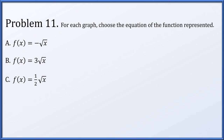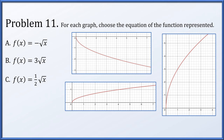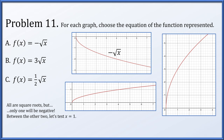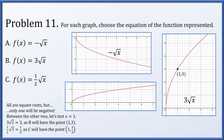In problem 11, we have three functions: f(x) = −root x, f(x) = 3 root x, and f(x) = one half root x, each matched to one of three graphs. The only one that produces negative outputs is −root x, so that matches the graph with negative y values. Between the other two, plugging in x = 1: 3 times root 1 equals 3, so we look for the graph containing the point (1, 3) — that's the graph on the right, matching 3 root x. Plugging in x = 1 for one half root x gives one half, matching the graph containing (1, one half).